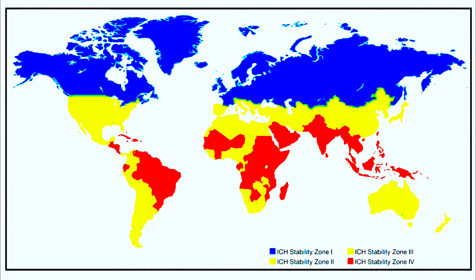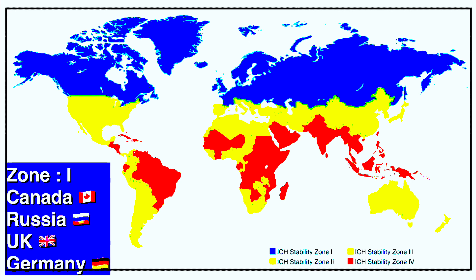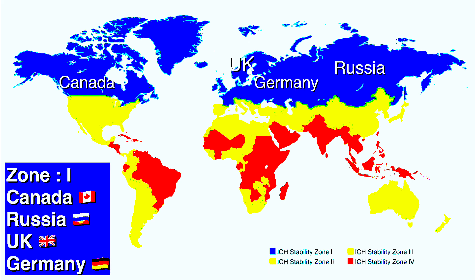Now we will learn various countries of the world and their climatic zones. As you can see on the screen, there is a colored map of the world with four different colors: blue, yellow, light yellow, and red. The countries under zone 1 are shown in blue, and most countries of Europe, Canada, Russia, and UK all come under zone 1.